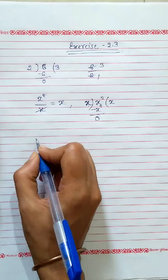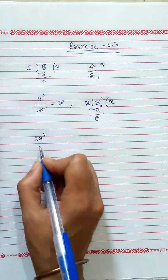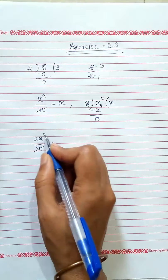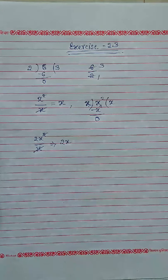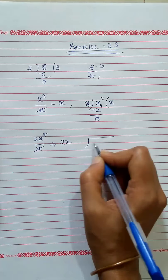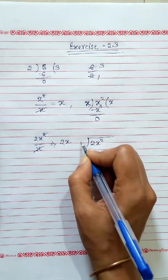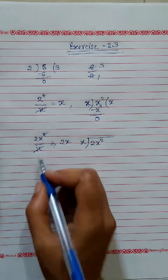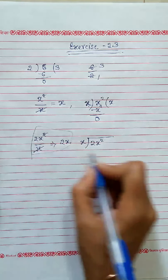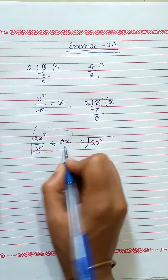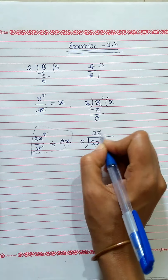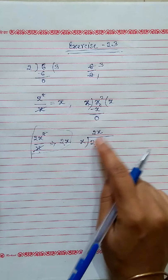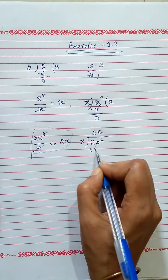Let me take one more example: 2x squared divided by x. So what is the answer? One x cancels with one x, so our answer is 2x. And the second way: 2x squared divided by x — we multiply 2x into x to get 2x squared. So here answer is 2x.